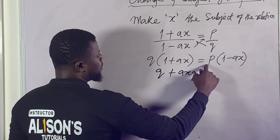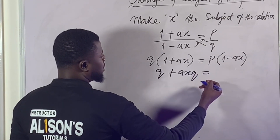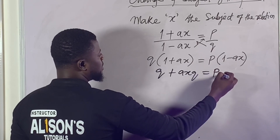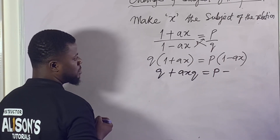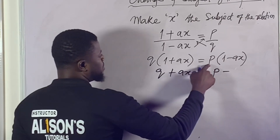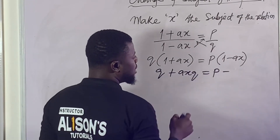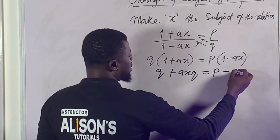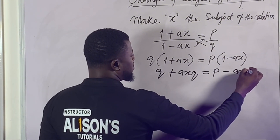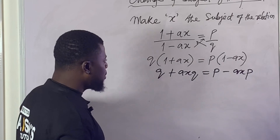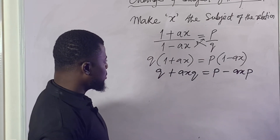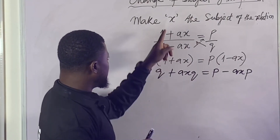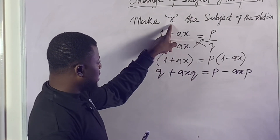Equals: if you use this against this, p multiplied by 1 would be p, minus p multiplied by ax, that would be axp. So I think it's becoming a bit clearer. Keep in mind we're interested in x.